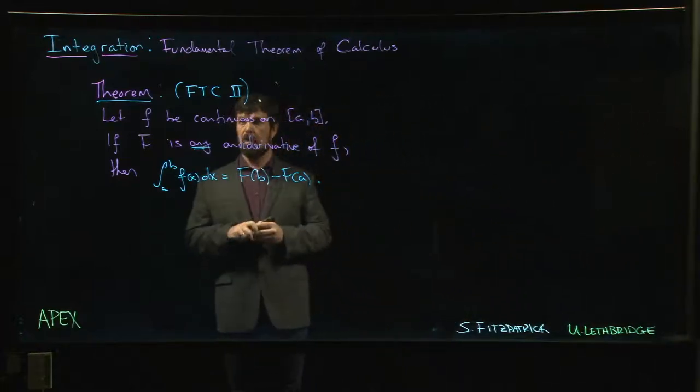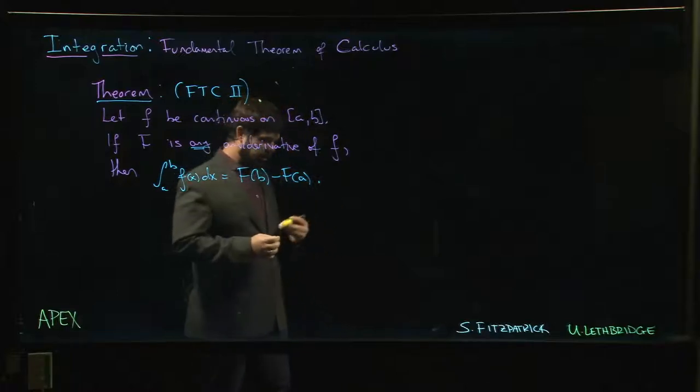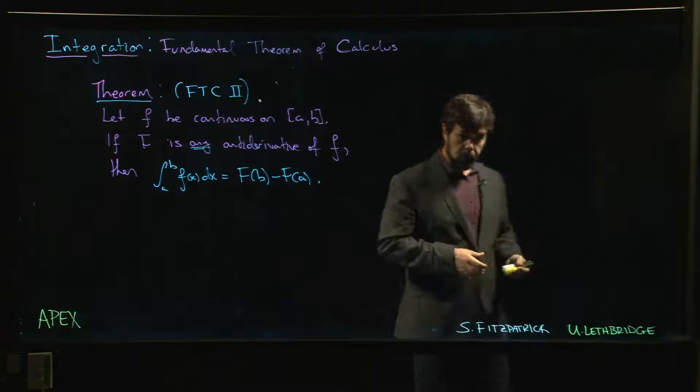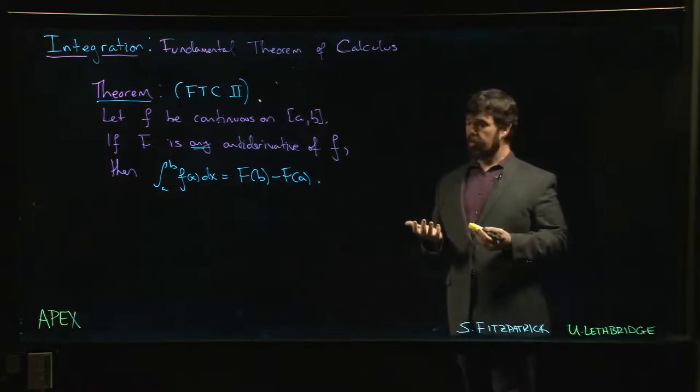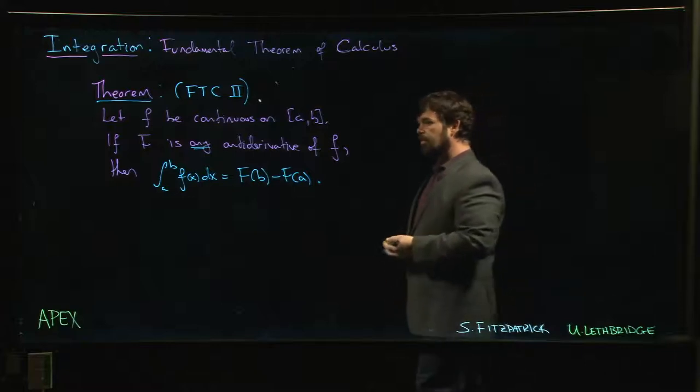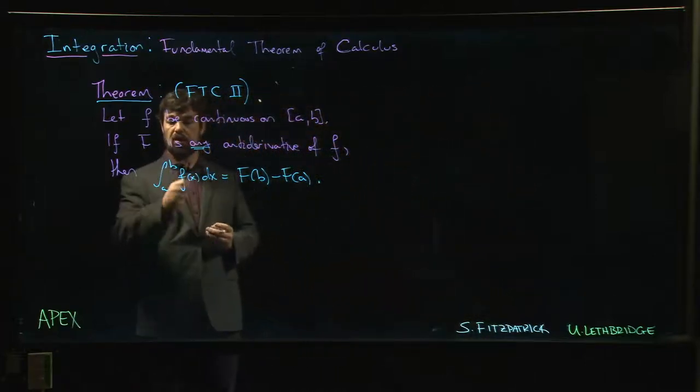All right, so now we come to the second part of the fundamental theorem of calculus. The first part says that we can use a definite integral to construct an antiderivative if we don't already have one. The second part says that if we do happen to have an antiderivative lying around, we can use it to evaluate the definite integral.